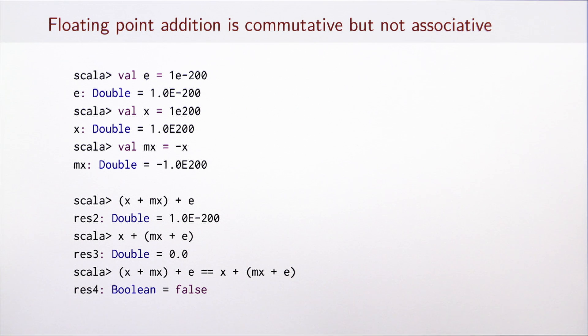It is important to keep in mind that some ubiquitous floating-point operations corresponding to important real-number operations turn out not to be associative. In fact, even addition of floating-point numbers is not associative, although it is commutative. Here we have an example where we evaluate an expression in two different orders and we obtain the value that is not equal.